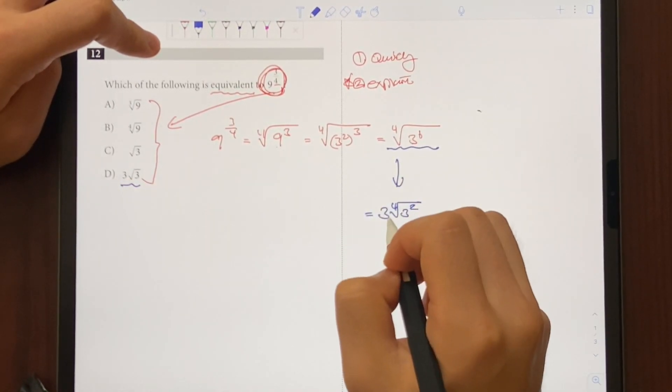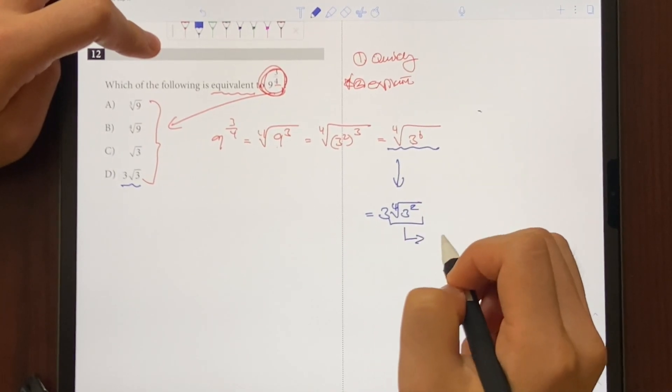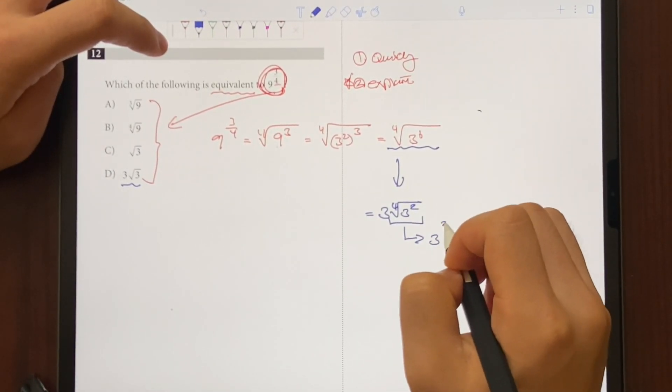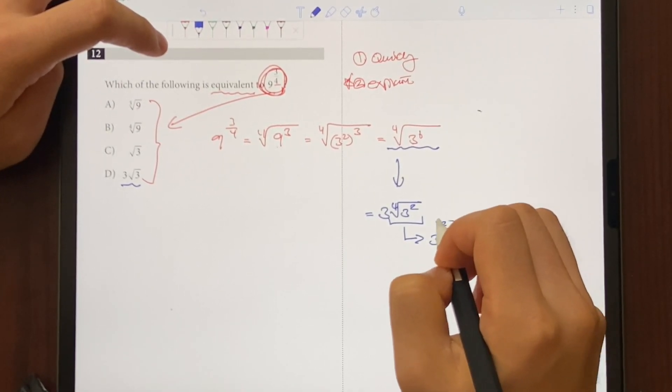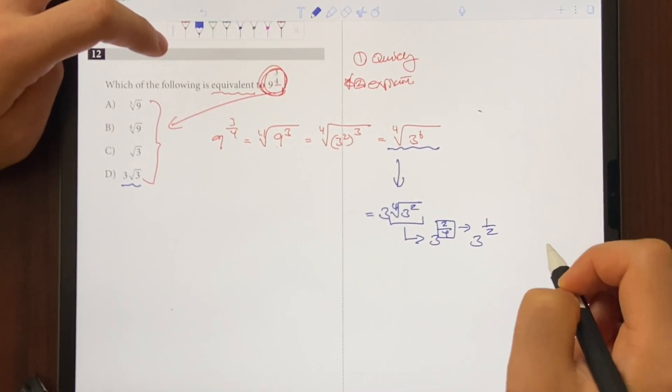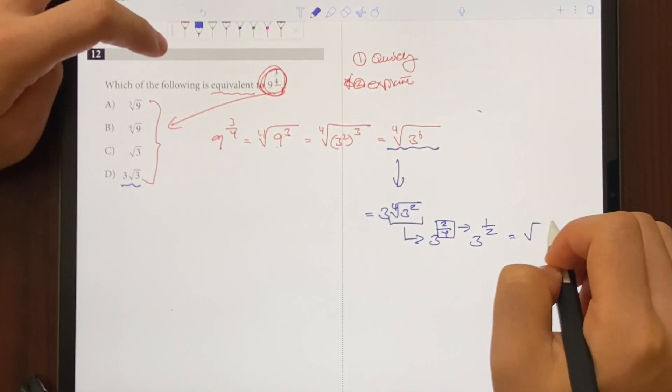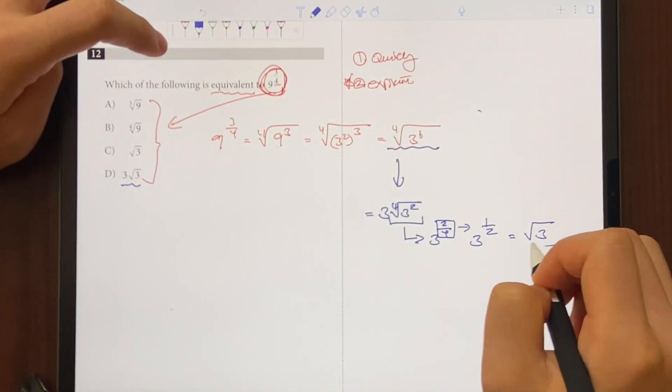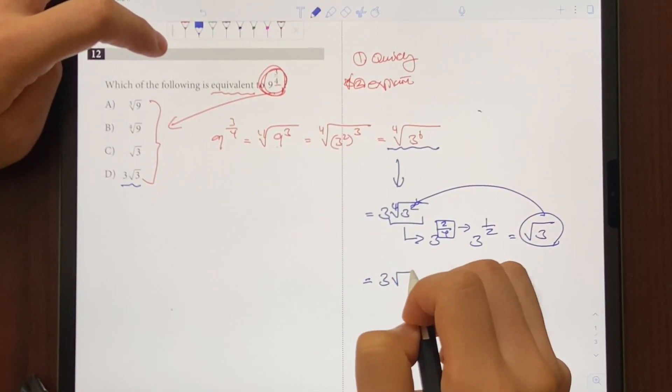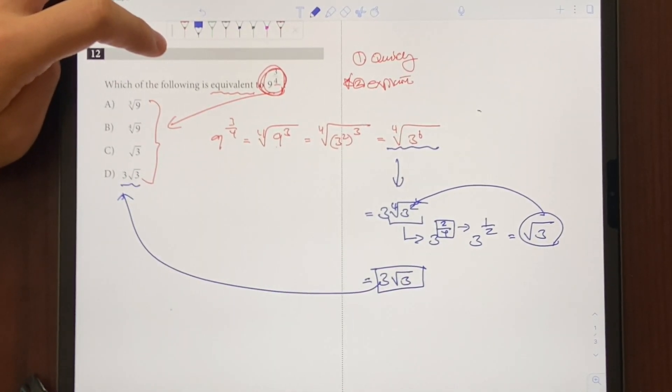If you look at the answer choices, we're getting pretty close to choice D, but this part is a little bit off. So let's change it back and see if we can simplify a little bit. So if we change to the exponent version, it's going to be 3 to the 2 over 4 power. And 2 over 4 is same thing as 1 over 2. So again, it's the same thing as 3 to the 1 half power. And we know that 3 to the 1 half power is just square root of 3. So we can switch this with that portion right there, which means it's just going to be 3 square root of 3, which means choice D is going to be our answer.